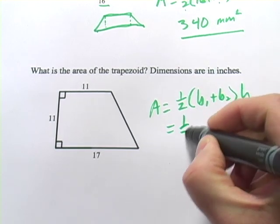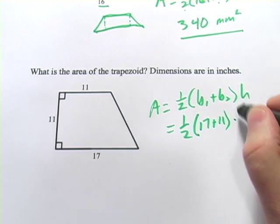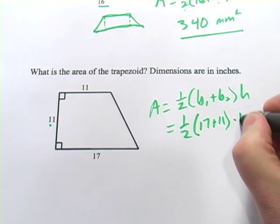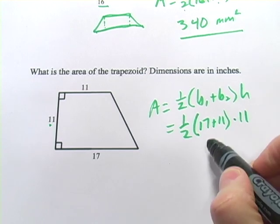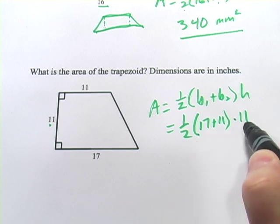So, we're going to have one half times 17 plus 11 times 11, which is the height. So, I would type in 17 plus 11, I'd get 28, I'd divide that by 2, that'd be 14 times 11.